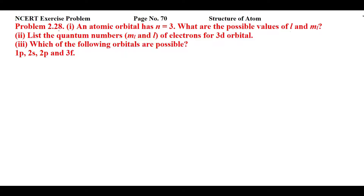This is NCERT exercise problem 2.28 from page number 70 of Structure of Atom. Let's read the statement: first, an atomic orbital has n equal to 3 — what are the possible values of l and ml? Second, list the quantum numbers ml and l of electrons for 3d orbitals. Third, which of the following orbitals are possible? This question has three parts.